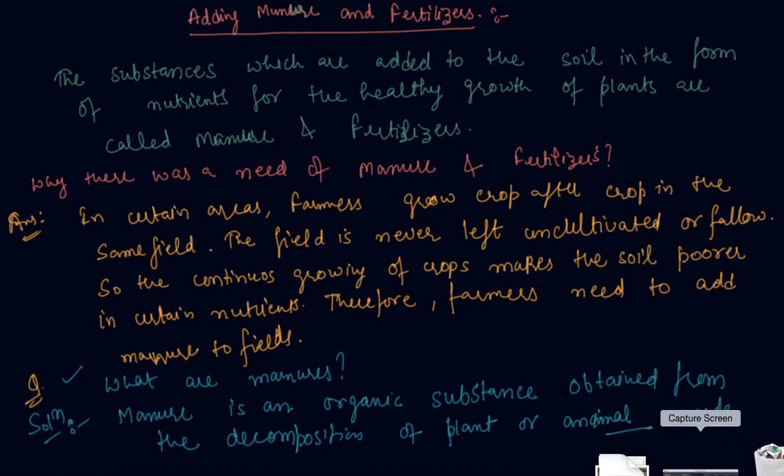And why they are used? Because of the regular usage of the land, the soil becomes poorer in certain nutrients, so we add manure to that. Now comes why fertilizers and what are fertilizers. Fertilizers are chemical substances which are rich in particular nutrients.